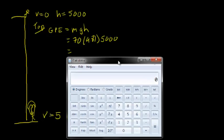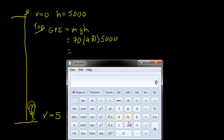We can use the calculator to solve for this gravitational potential energy. And we get that it's about 3.5 million joules.